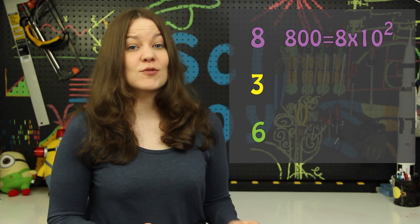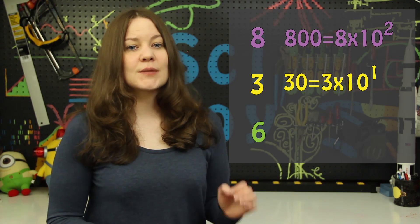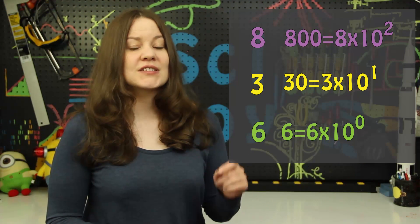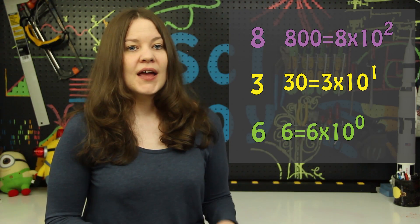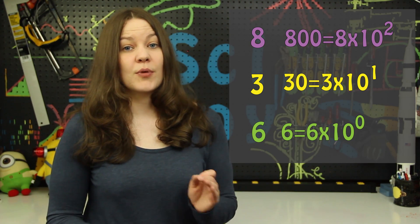So 836 written in base math is 8 times 10 raised to the 2, plus 3 times 10 raised to the 1, plus 6 times 10 raised to the 0. In other words, this would be 800 plus 30 plus 6. Binary works the same way, but instead of having numbers that range from 0 to 9, we only have 0 and 1.